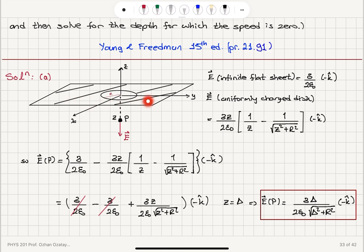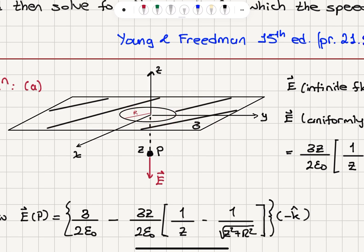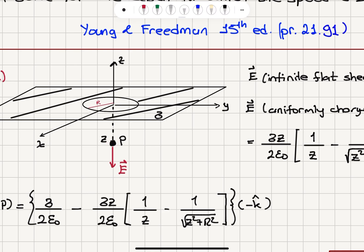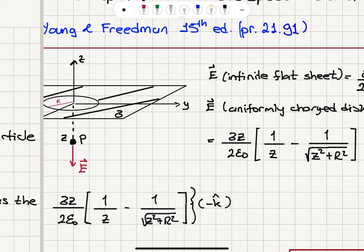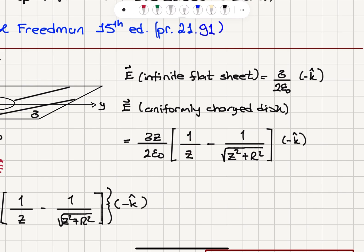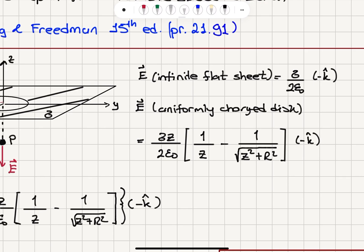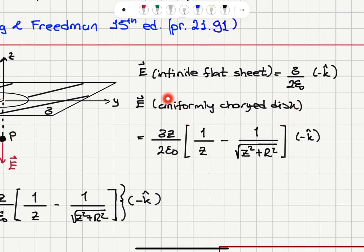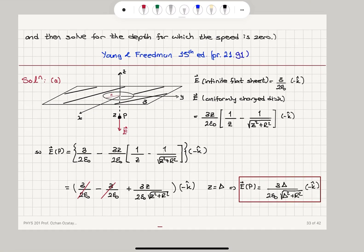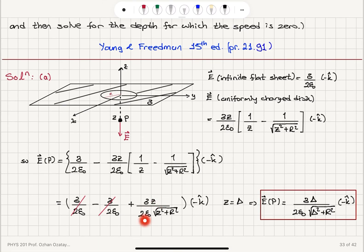To summarize Part A: we recall the electric field due to the infinite flat sheet σ/(2ε₀) in the minus k-hat direction, and the field due to a uniformly charged disk σz/(2ε₀) · [1/z − 1/√(z² + R²)] also in the minus k-hat direction. Subtracting the disk field from the sheet field accounts for the hole, leaving σz/(2ε₀√(z² + R²)). Setting z = δ gives the final answer.